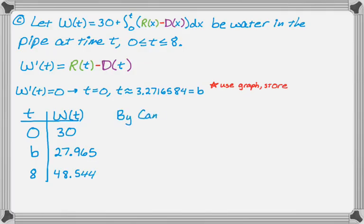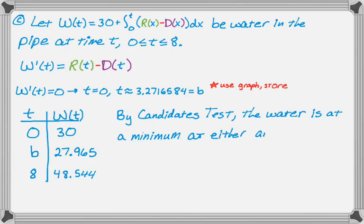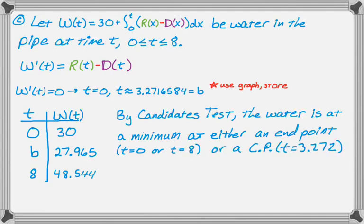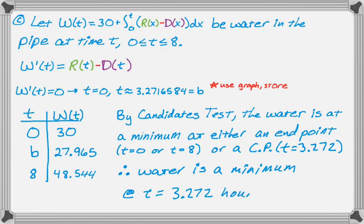So I'm going to say by candidate's test, the minimum amount has to occur at either an end point, and I know the end points are zero and eight, or at a critical point, and I solve for the critical point, which was that value, which I stored as B. Looking at the table of values that I got, I know that the water is at a minimum at T equals 3.272 hours. And that's pretty much all there is to it.